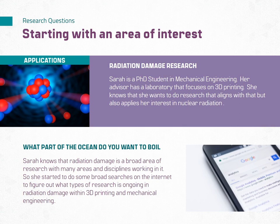Sarah told Professor X that she would like to include an aspect of nuclear radiation in her research. Professor X told her that she would be fine as long as she can find adequate research questions, and recommends that Sarah start doing some preliminary research to see what she can find out. Sarah starts Googling additive manufacturing and ionizing radiation to see what the ongoing research in the field is. She uses ionizing radiation as her search criteria because she isn't sure yet what type of radiation she wants to include in her research. She knows she wants her research to be experimental and focuses her search on 3D printed plastic because that is what her advisor's lab is working on.